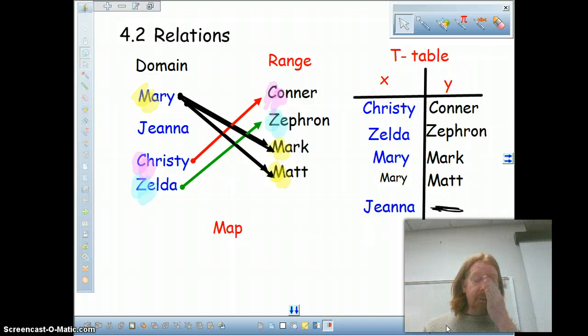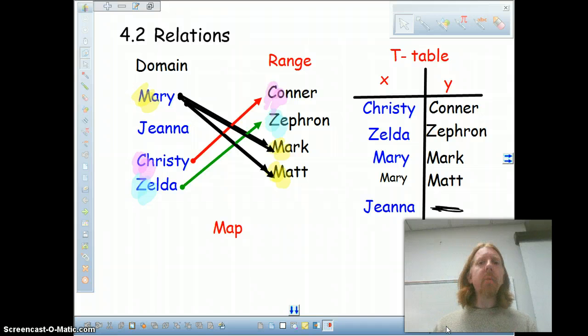For example, in our first relation we take the names in the domain list and we pair them with names in the range. This example is not a function. There are lots of things that are wrong with it as far as functions go. For starters, not every domain value gets used. In a function, every domain value must be paired with an item in the range. If any domain value is not, then it's not a function.